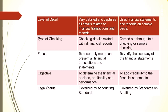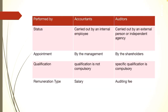Today's class will start with the next point, that is 'performed by.' Accounting is performed by accountants — for recording the business transactions or day-to-day activities, an accountant will be appointed — whereas auditing is performed by a qualified auditor.